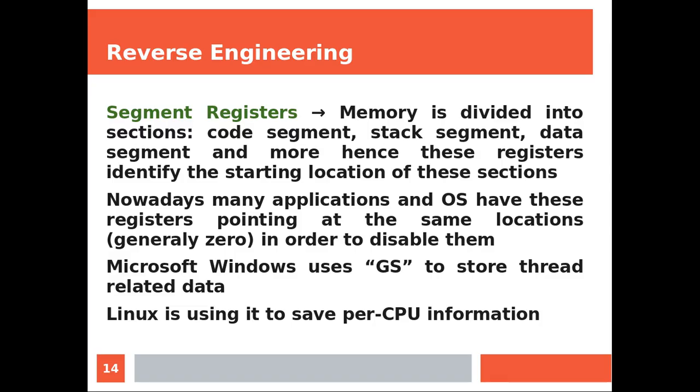Microsoft Windows uses GS to store thread-related data, while Linux is using GS to save per CPU information.